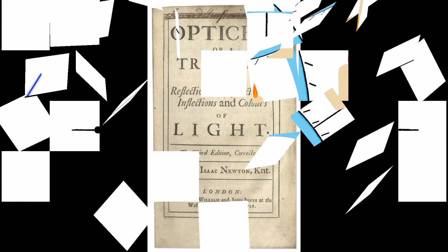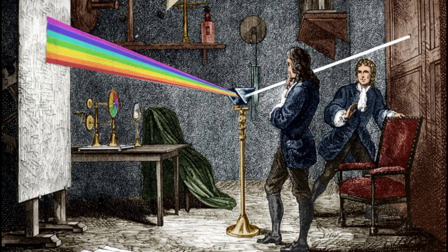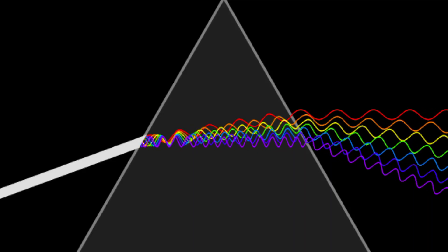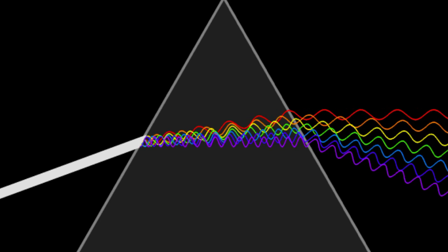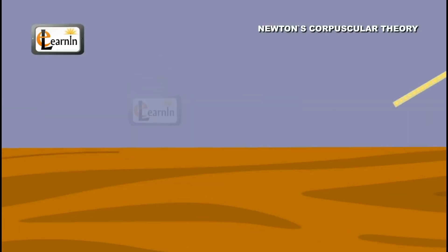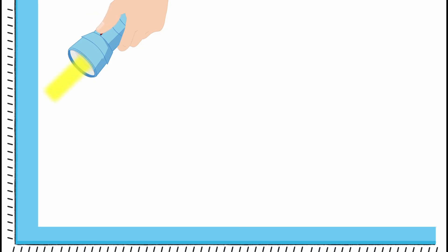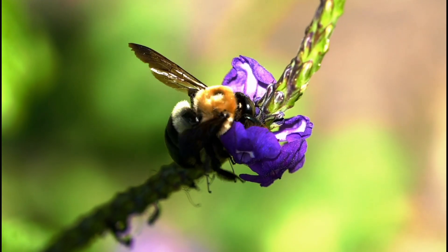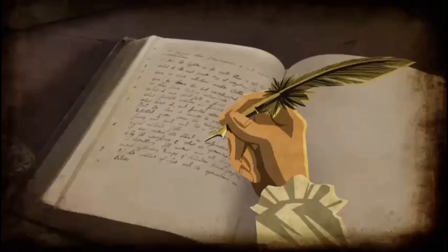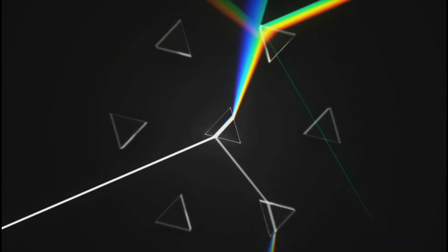In his famous book, Optics, Newton detailed his experiments on the dispersion of light and the discovery of the prism. He also explained the concept of light refraction and reflection, providing a deeper understanding of how we see the world around us. Newton's work in optics opened up a whole new realm of scientific exploration, paving the way for further advancements in the field of physics and engineering.